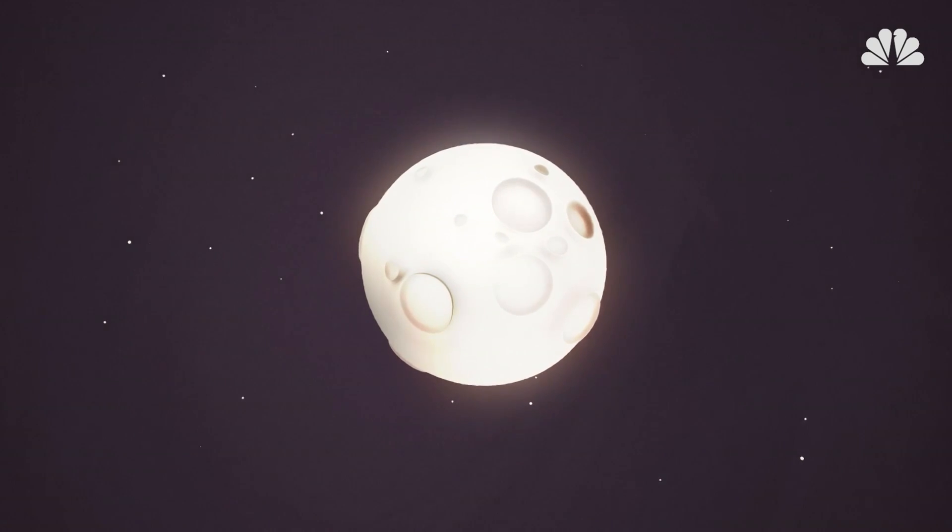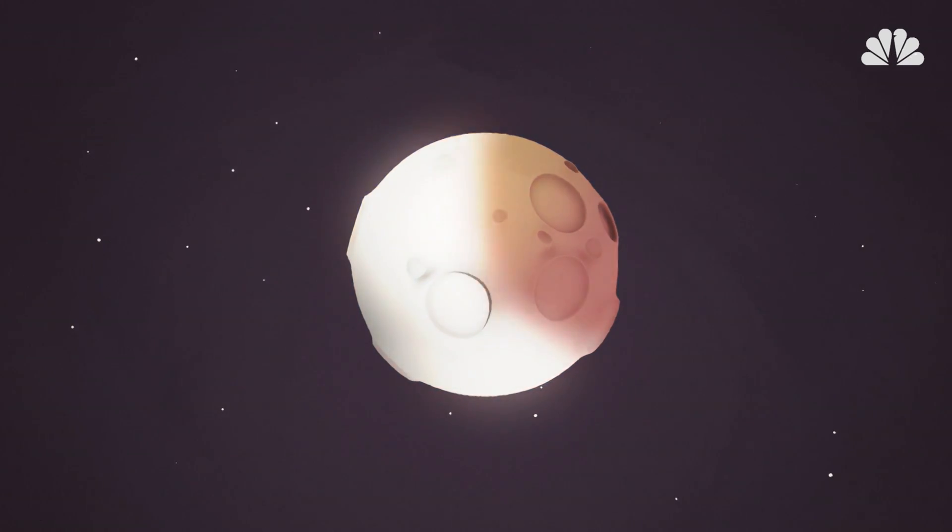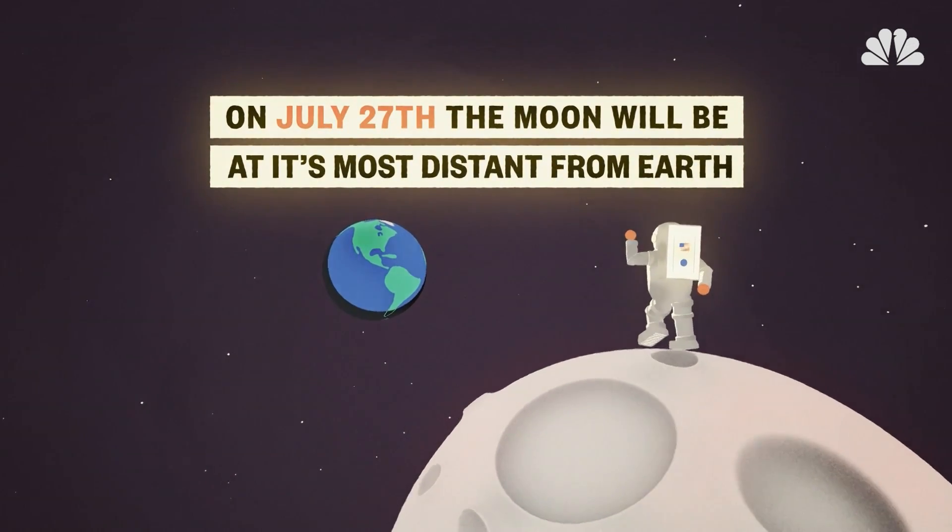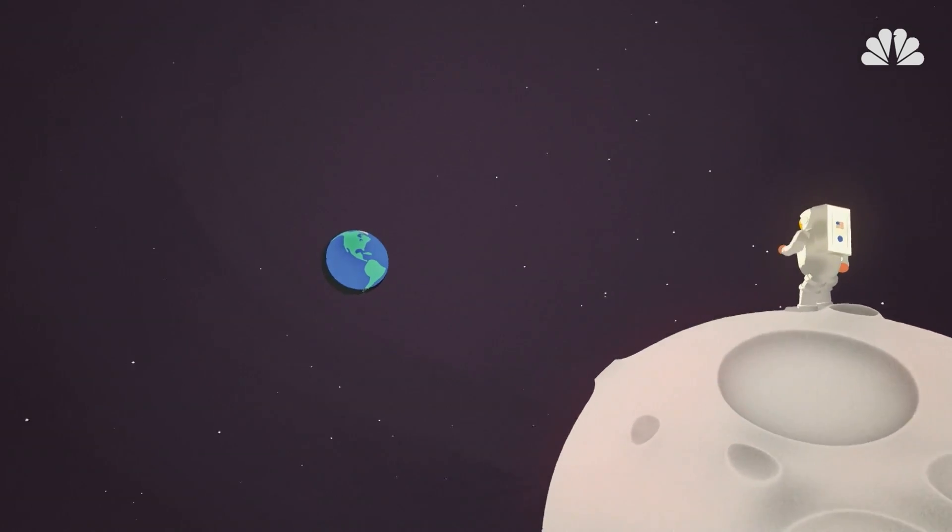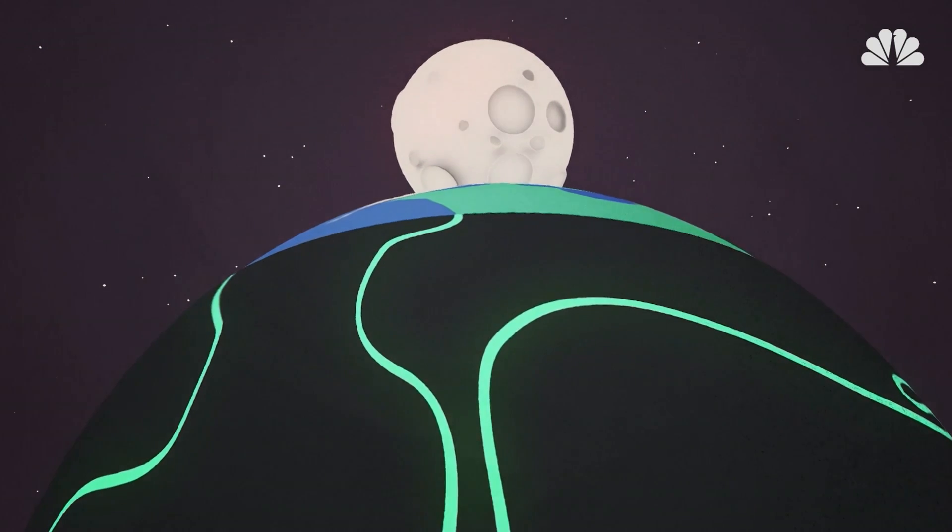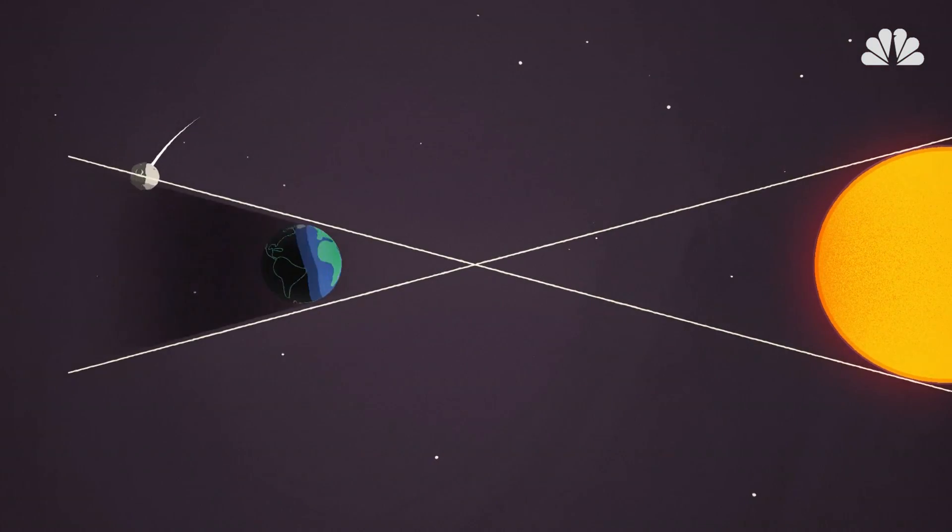Total lunar eclipses occur when the Moon moves right down the center of the cone and is completely engulfed in Earth's shadow. On July 27th, the Moon will also be at its most distant point from Earth in its monthly orbit. This means that it will appear smaller in the night sky, and the Earth will cast a longer shadow, which the Moon will take longer to move through. This makes the eclipse longer than usual.